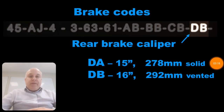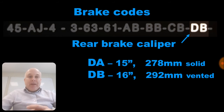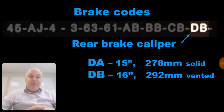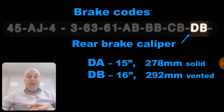The fourth and final brake code is for the rear brake caliper and starts with a D. DA is for the 15-inch 278 mm disc and DB is for the 16-inch 292 mm vented discs.